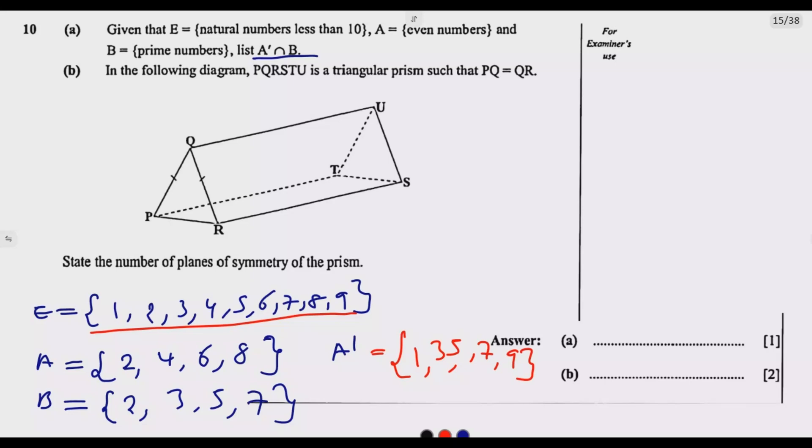Then after this now, we need to look for A complement intersection B. So what are the elements that are found in B? So we start looking, we have 2, there is no 2, so it's not, but we have 3. So 3 is here, we have 5, then we have 5, then we have 7, then we have 7. So we've got 3, 5, and 7. So this is the set we are looking for, 3, 5, and 7. Then when you do this, you are good to go, you get that one mark.